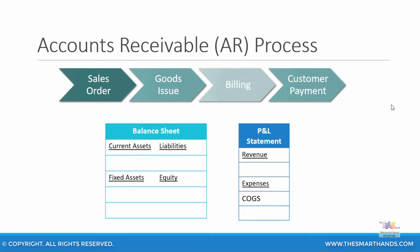Let's look at the high-level view of the Accounts Receivable process. You are selling an item to your customer — you can create a sales order and present it to your customer. Then you can start issuing your goods, which becomes a goods issue process. You can send out billing information to your customer, which becomes a billing process. Finally, you are expecting your customer to pay you — it becomes a customer payment process.